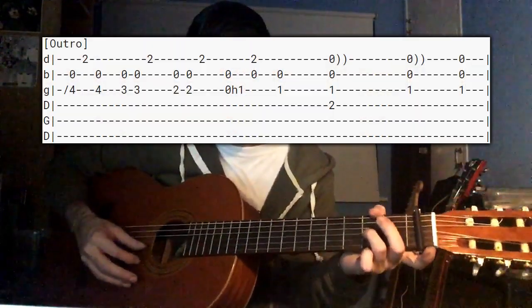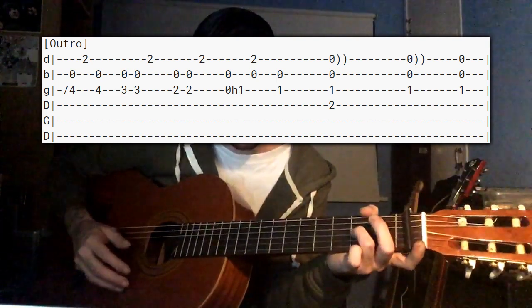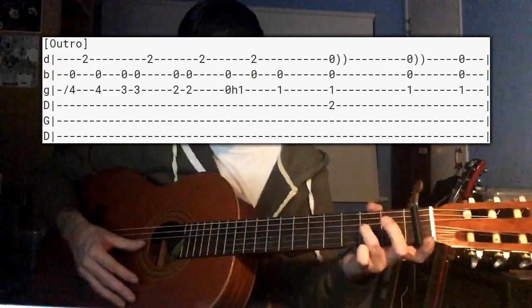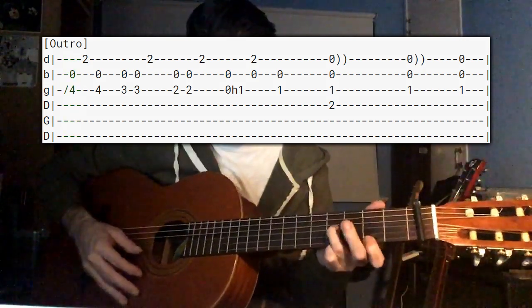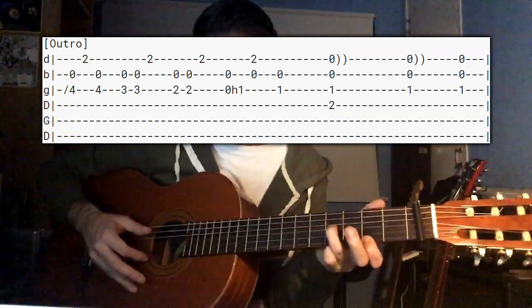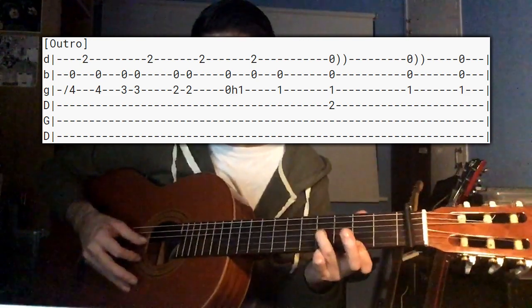And now the 2nd string stays open during this outro. It's a little bit of a turnaround sort of sound. So you slide on the 3rd string up to the 4th fret while you play open 2nd string. And you play the 2nd fret of the 1st string immediately after that.